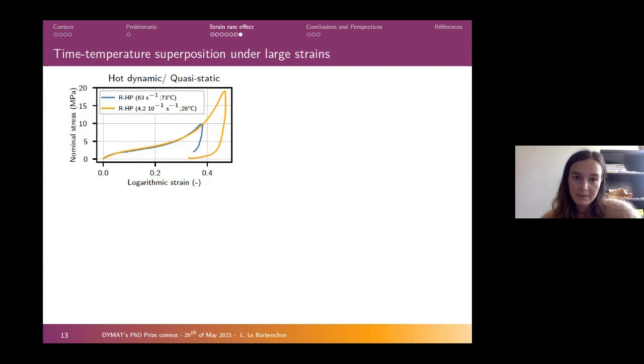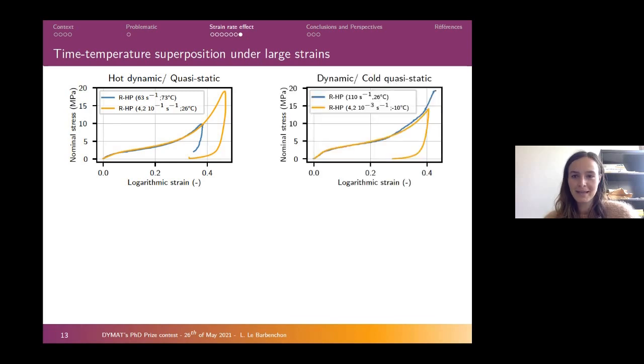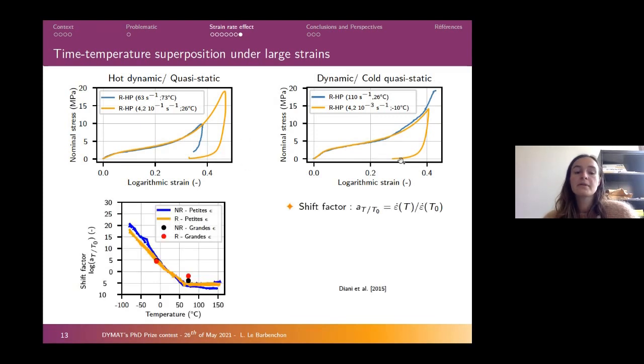We were able to find time-temperature superposition under large strain, as you can see here, either at high temperature in dynamic versus quasi-static, or in dynamic versus cold in quasi-static. These two couples of curves give us shift factors that we can compare to the first results. In orange and blue, we have the shift factors for the small strain. In red and black, we have the shift factors for the large strain with a structure effect.